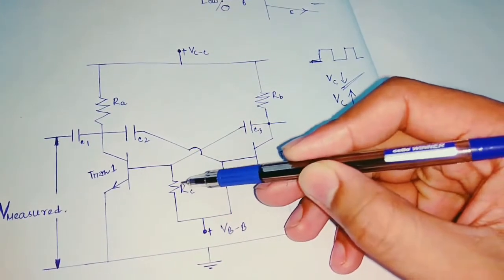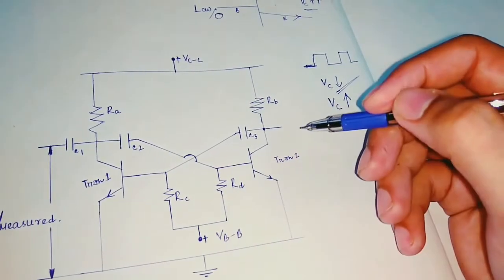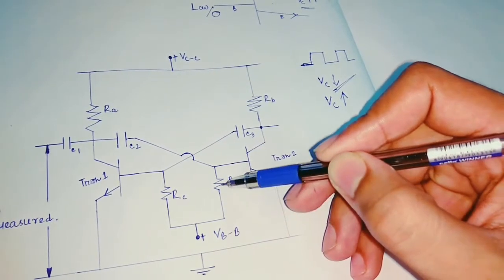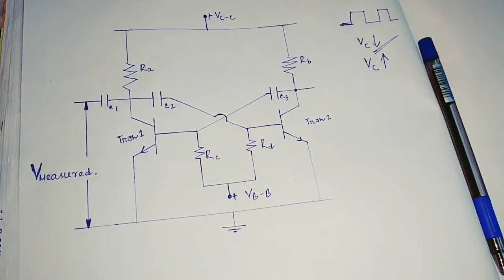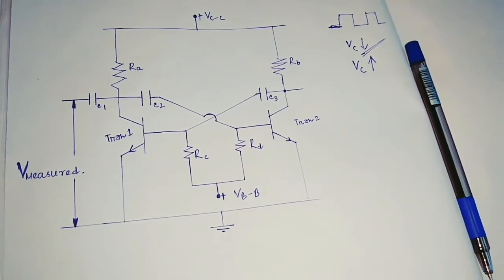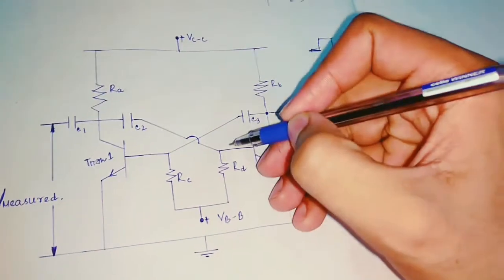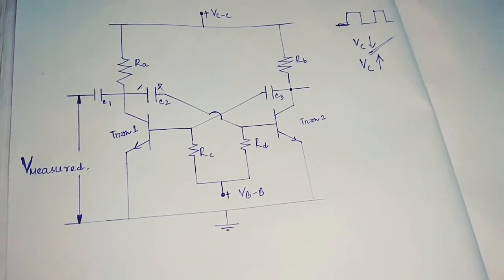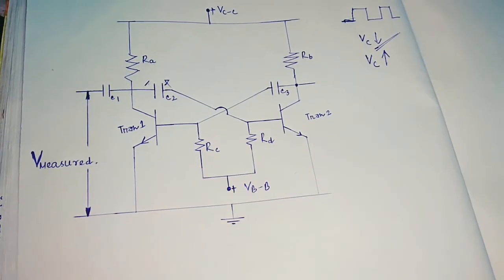Now we have two resistors RC and RD connected base-to-base. As soon as we apply a base-to-base voltage, this voltage will try to go through the RD resistance to the base of transistor two. But we know that transistor two is in the cutoff region, so the current that the VBB voltage provides will not go to the base of transistor two. Instead it will follow the same path and go to the capacitor — so the capacitor will charge, with plus on one side and minus on the other. The charging of that capacitor will start occurring.